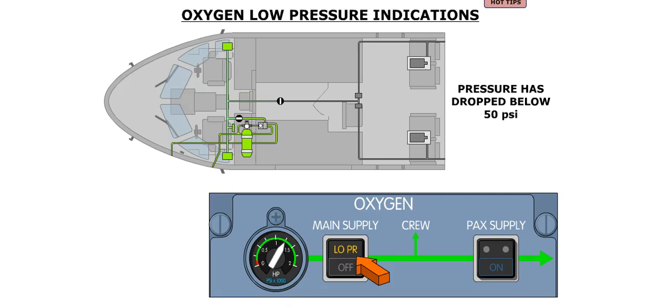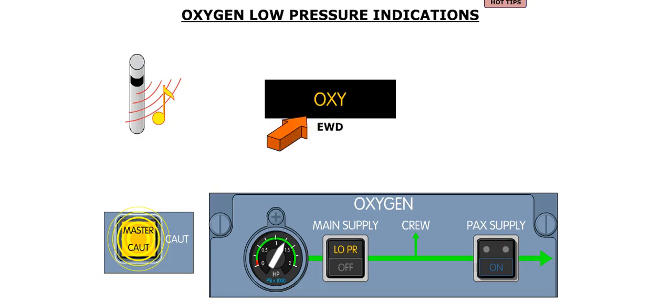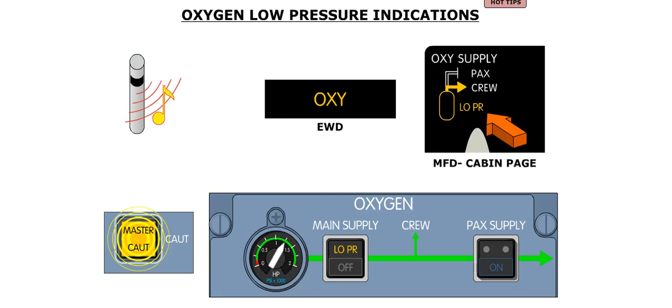The low pressure light illuminates amber when the pressure downstream of the pressure reducer is below 50 psi. In addition, the master caution lights flash, a single chime will sound, an amber OXY label is displayed on the EWD, and an amber low pressure label is displayed on the MFD cabin page.